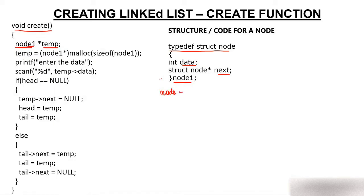Above main, we create a node1 type pointer variable 'head' and assign it null, and also a node1 type pointer 'tail' assigned null. This is because if there is no linked list, there is no head and no tail.